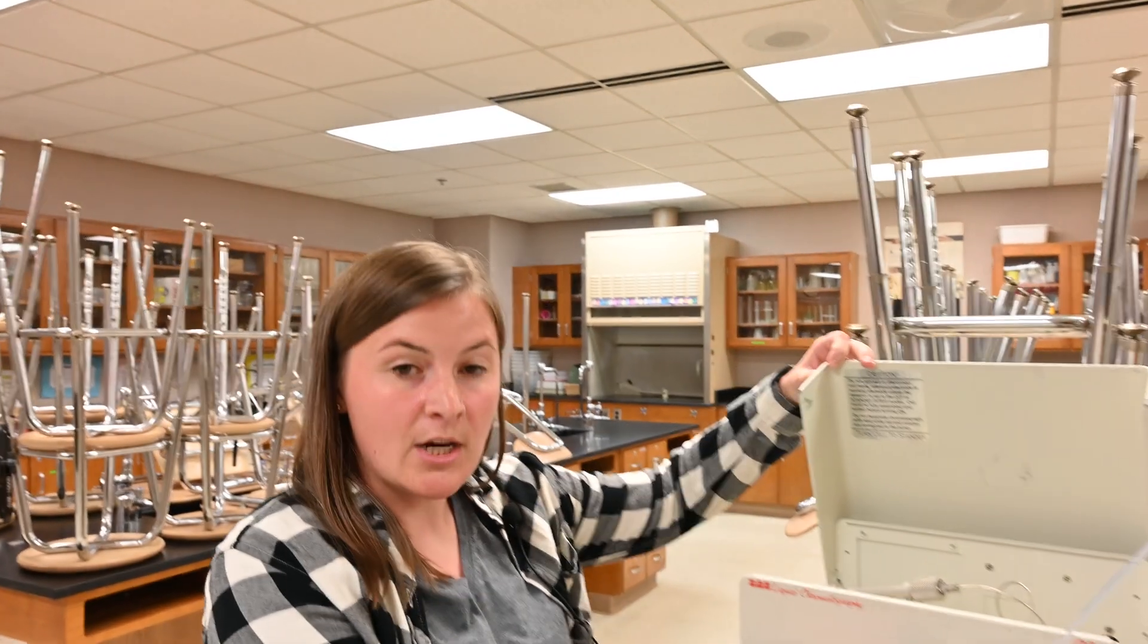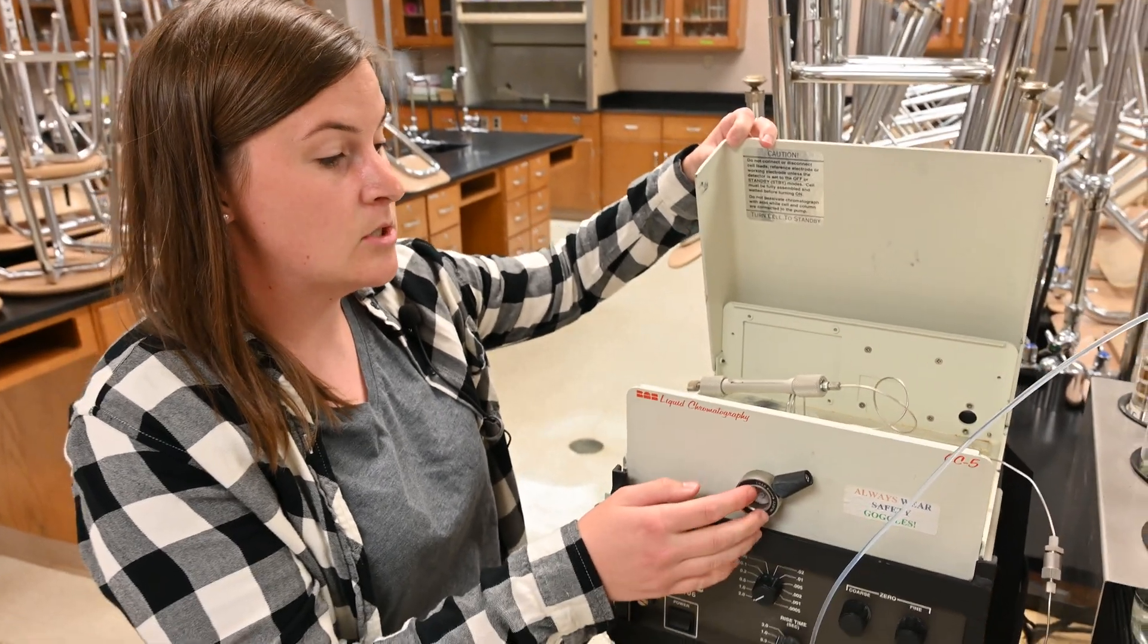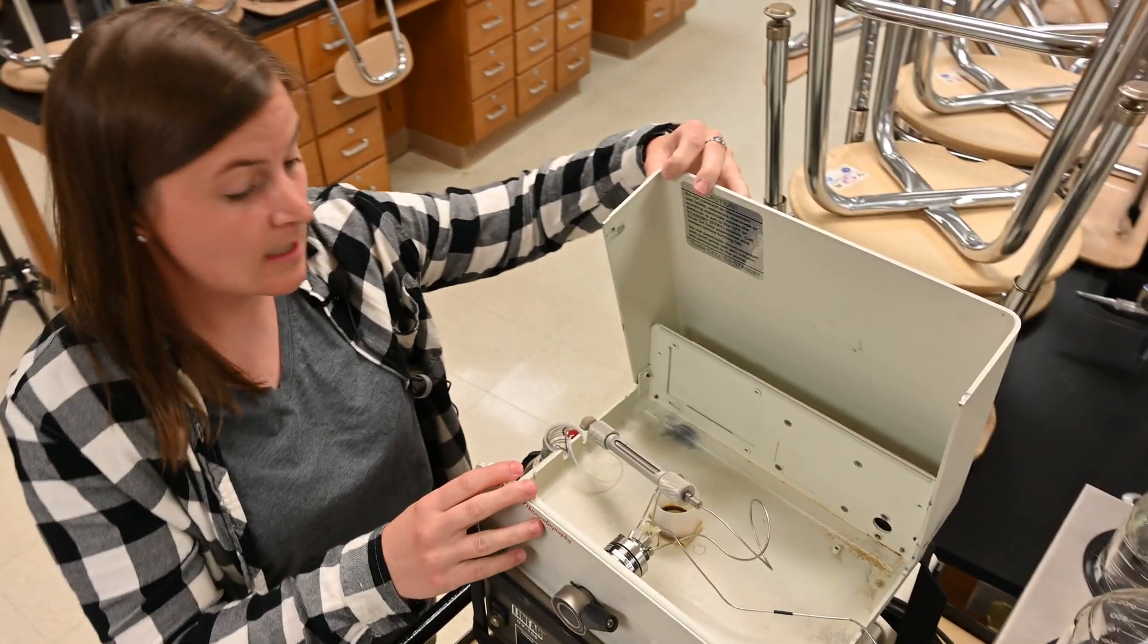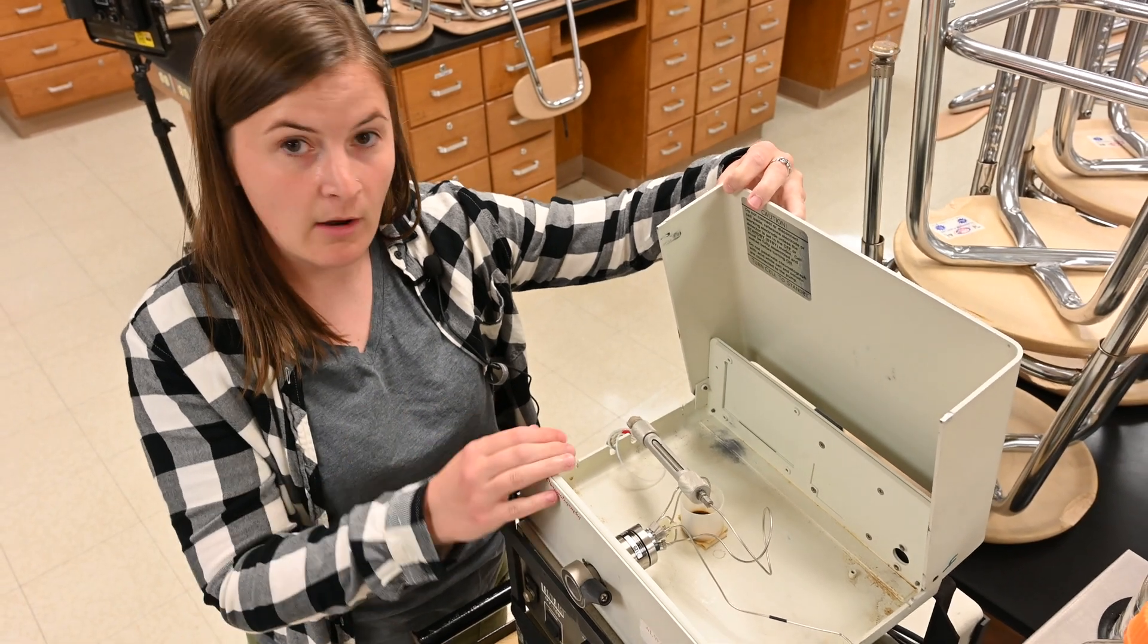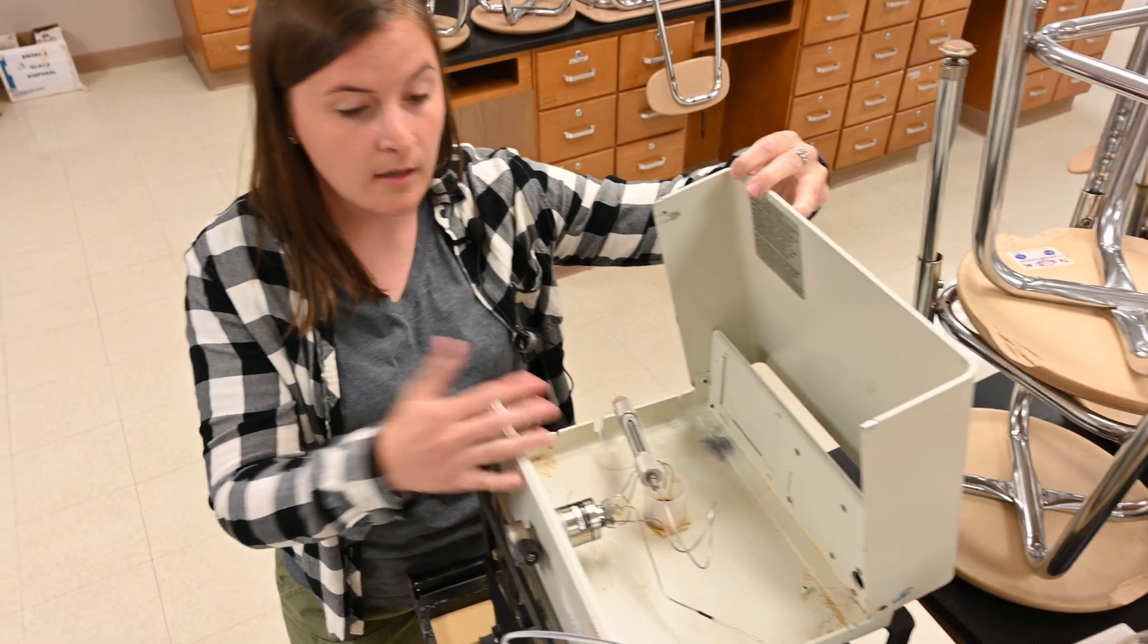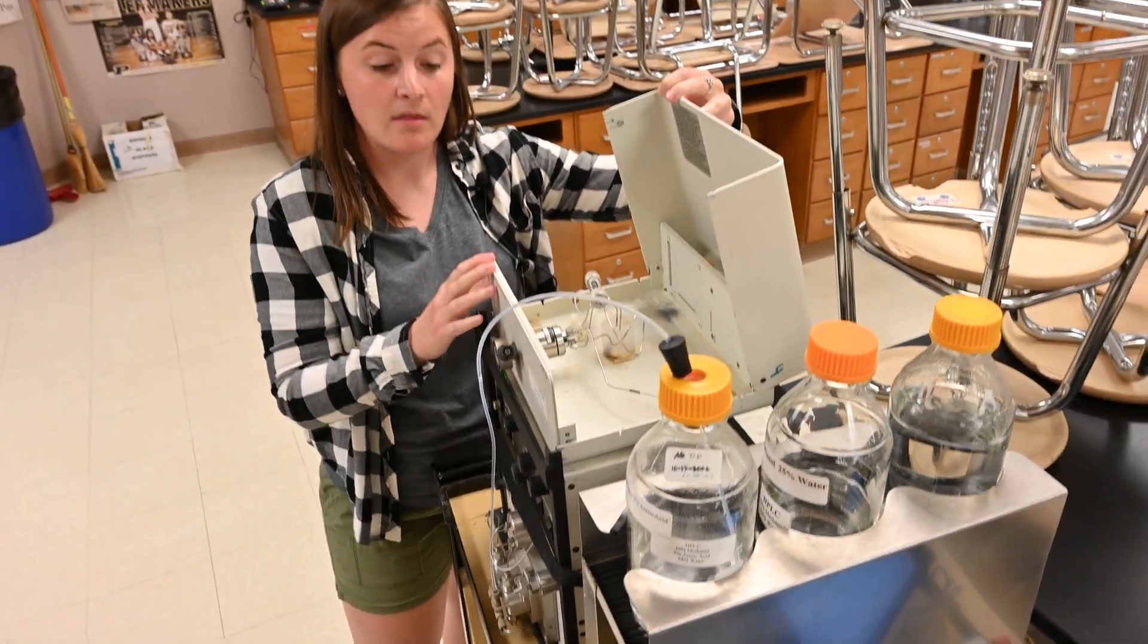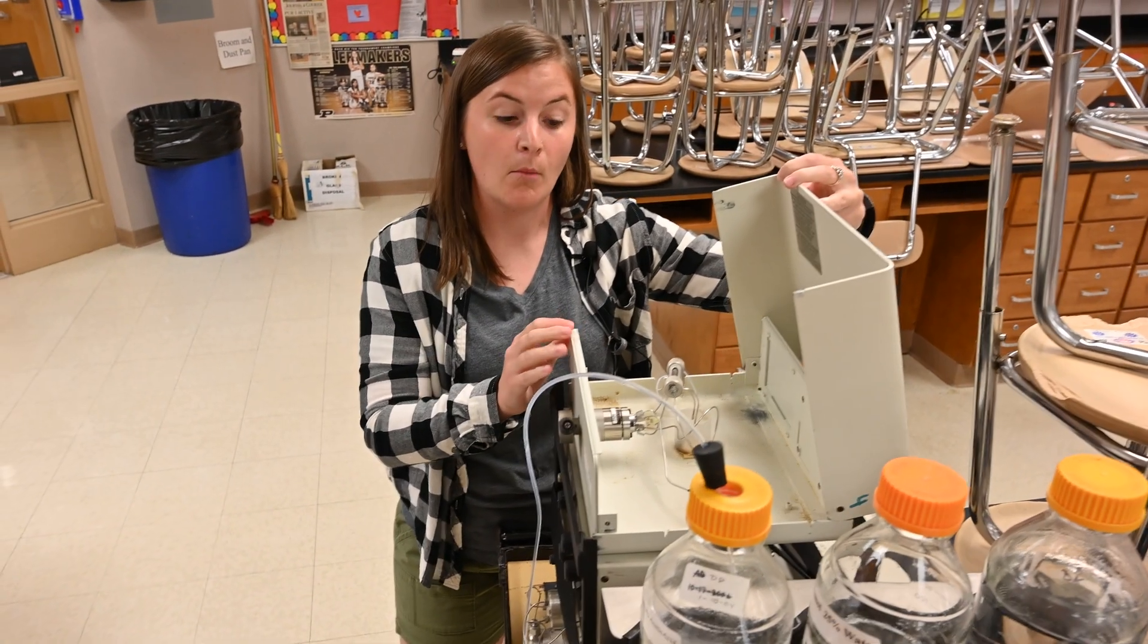We have our injection port. So this is where we're going to take our syringe and enter our sample into the column. The magic kind of happens here. We have our column and in that column we have what we call a stationary phase, which is the phase you guys read about in your pre-lab that stays tuned to that column and lets things pass through it. The mobile phase is our 68% water and 30% methanol and that's going to carry our sample through this column.